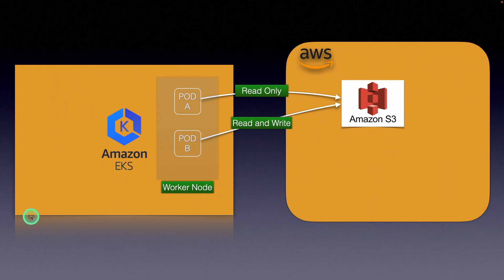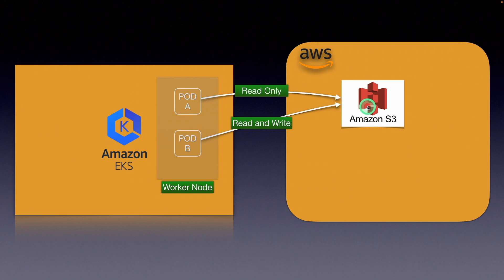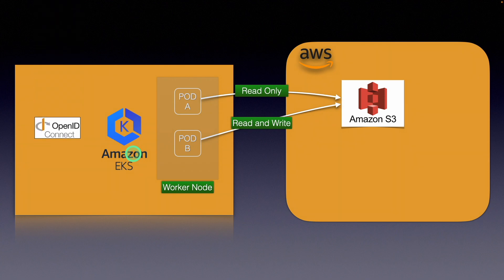We have this EKS cluster. For the sake of this demo, let's assume it has one worker node on which two pods are deployed — Pod A and Pod B. The requirement here is that Pod A is only supposed to read from S3, and Pod B can both read and write to S3. To accomplish something like this in EKS, the first thing that needs to happen is an OIDC provider has to be enabled for that particular cluster. There are CLI commands you can execute against the cluster to enable the OIDC provider.